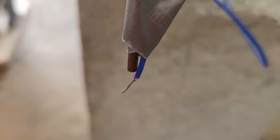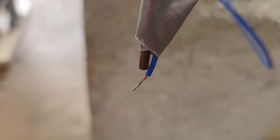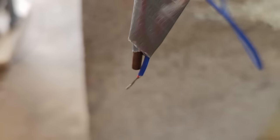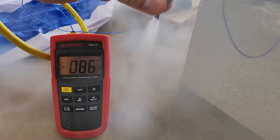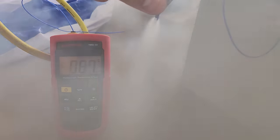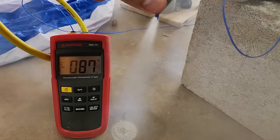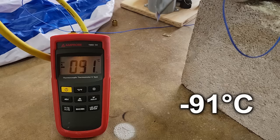I'm going to put a naked thermocouple directly in the path of the discharge from the condenser to see what temperature the nitrous reaches when it hits the atmosphere and expands. We initially hit minus 87°C and the reading bottoms out at minus 91° before coming back up. Considering that the boiling point is minus 88°, this is exactly what we should be seeing.